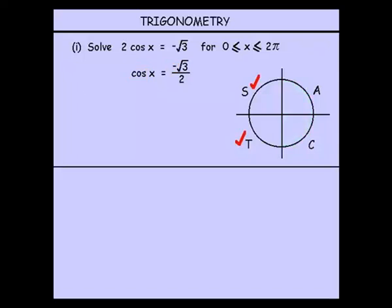So on the calculator then, if we put the root 3 over 2, root 3 on 2, and we take the shift cos, the inverse cos of it, what we end up getting, we're going to leave it in degrees at this stage, we end up getting 30 degrees. So on our diagram, we're actually going to mark it in as degrees. So 30 degrees in the second quadrant and 30 degrees in the third quadrant.